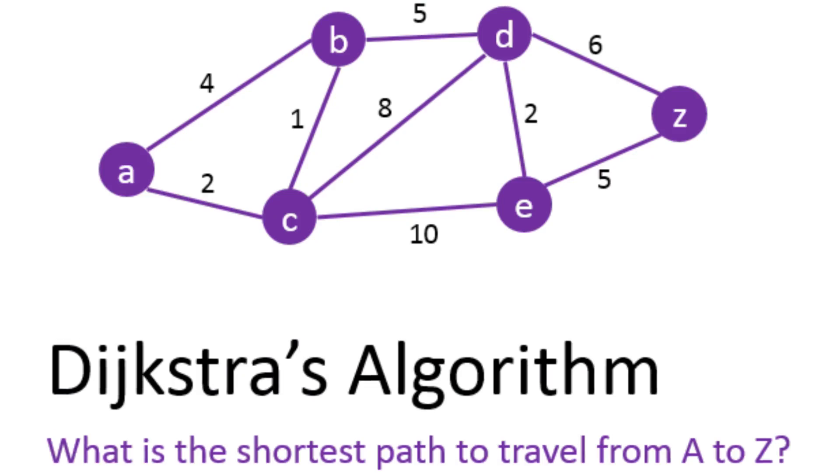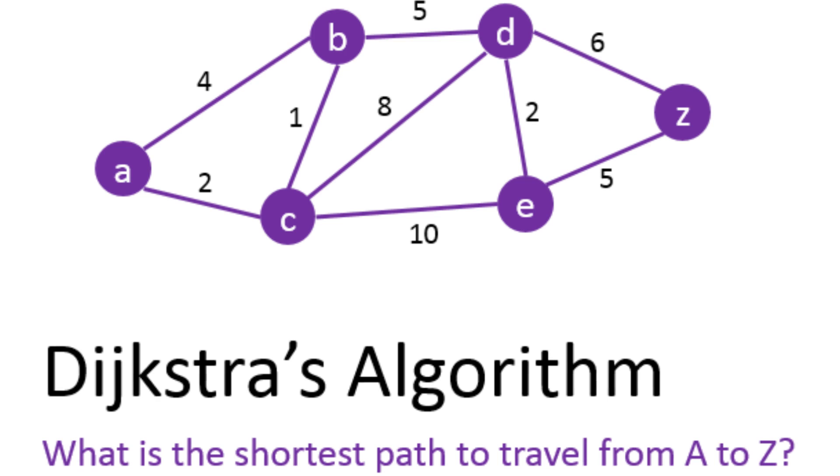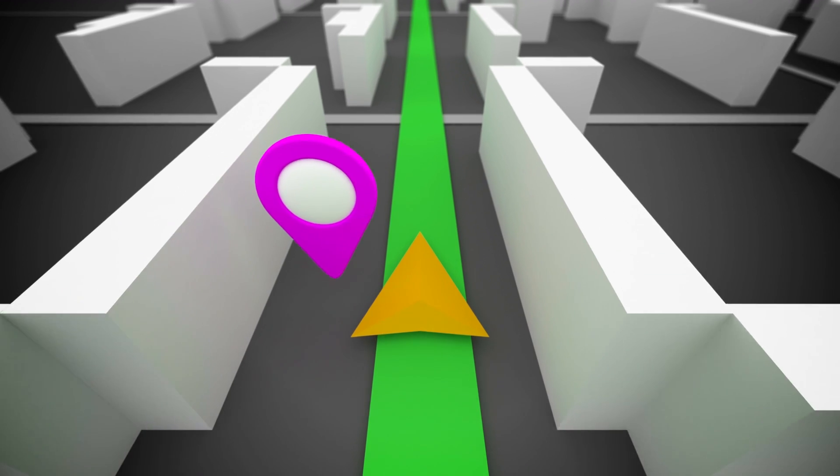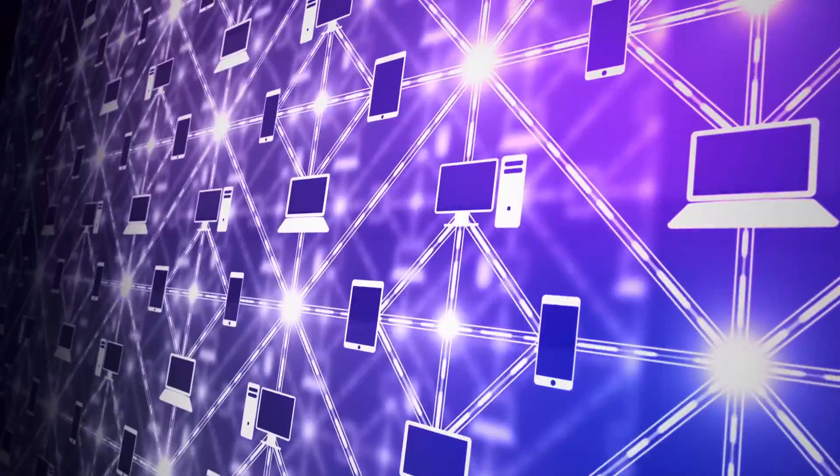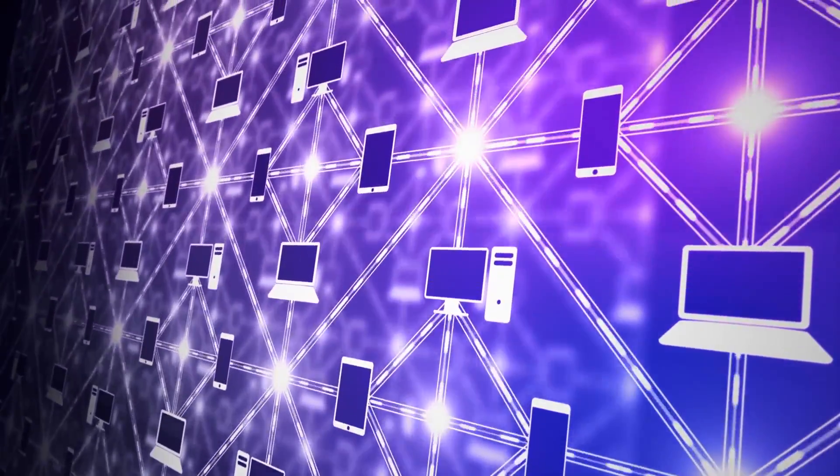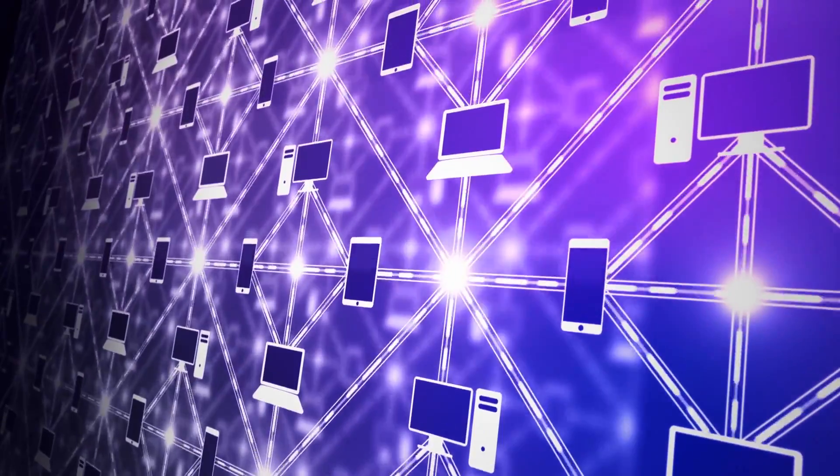Something known as Dijkstra's algorithm finds the shortest path between two nodes and a network, and this is the basis for how Google Maps and GPS routing works. It's also heavily used in routing computer networks, so without algorithms like this, internet speed and communication would slow down.